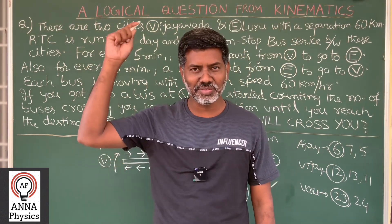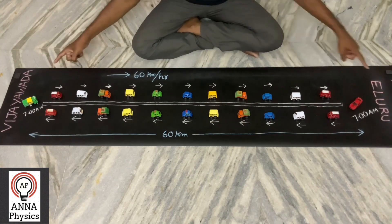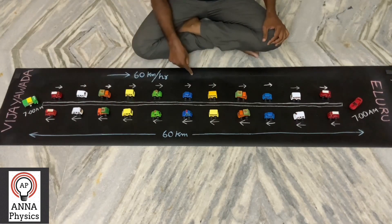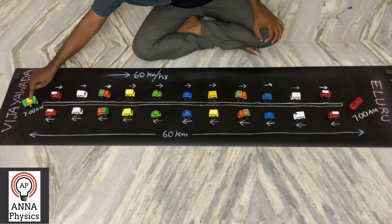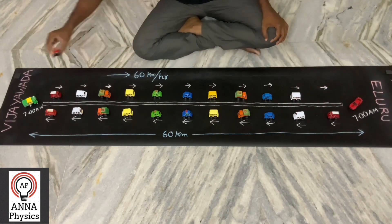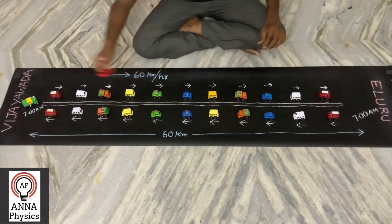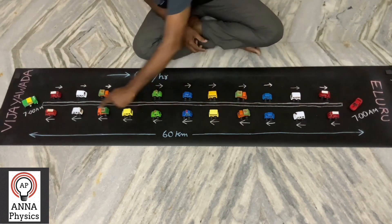For a better idea, I am showing the same bus service model using a set of toy cars. This is Vijayawada and this is Eluru. Distance between them is 60 km. All these buses are moving with uniform speed 60 km per hour, so travel time of each bus is 1 hour from here to there or from there to here. Now, you got into this bus at 7 a.m. The bus that departed from Vijayawada at 6:55 a.m. is on the way to Eluru. The 6:50 a.m. bus is also on the way, and the bus that departed 55 minutes before is almost about to reach Eluru. The bus that departed exactly 1 hour before — at 6 a.m. — is now ready to depart from Eluru.